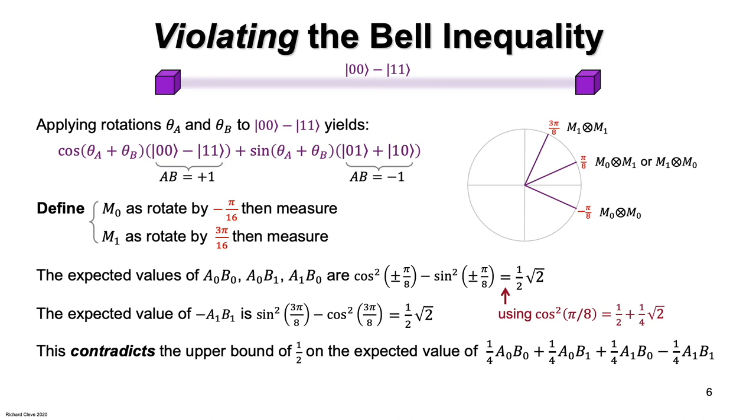So what would happen if we performed the aforementioned experiment of repeatedly picking a random ST and measuring to sample minus one to the ST ASBT?